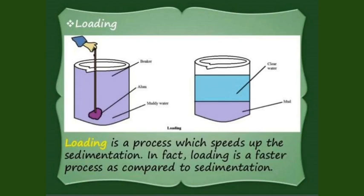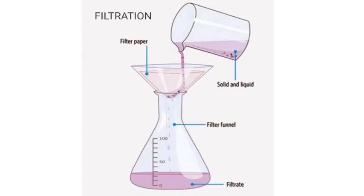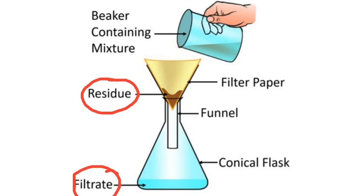The next process is filtration. Filtration is the process of separating fine insoluble solid particles from a solid-liquid mixture through a filter. The fine particles remain suspended in the liquid, so we use filtration. The mixture passes through a filter with pores that allow the liquid through but not the solid particles. The solid left on the filter is called the residue and the clear filtered liquid that flows out is called the filtrate.